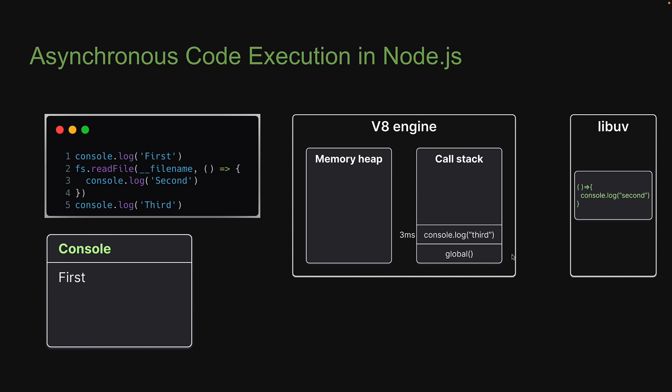At three milliseconds, JavaScript proceeds to line five. It pushes the log function onto the stack. 'Third' gets logged to the console and the function is popped off the stack. Now there is no more user-written code in the global scope to execute, so the call stack is empty.